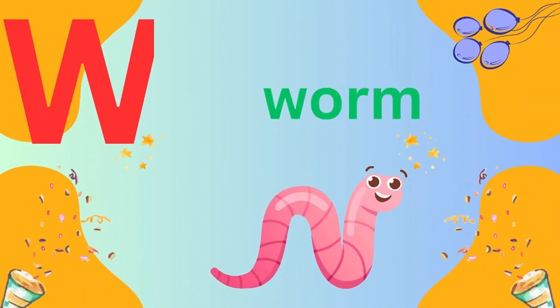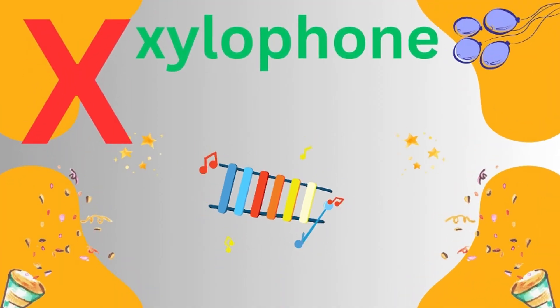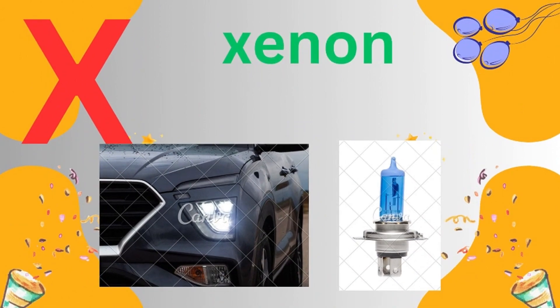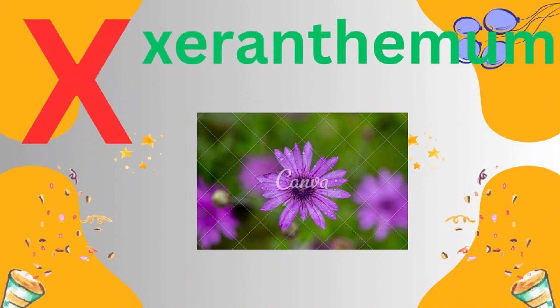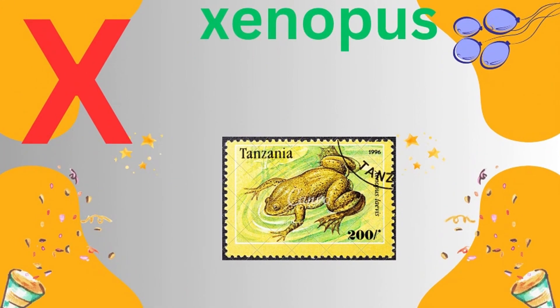W is for worm. X is for legislation. X is for XP. X is for tuyata.